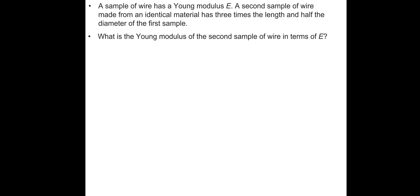Pause and have a go. A sample of wire has a Young's modulus E. A second sample of wire, made from an identical material, has 3 times the length and half the diameter of the first sample. What is the Young's modulus of the second sample of wire in terms of the original Young's modulus?